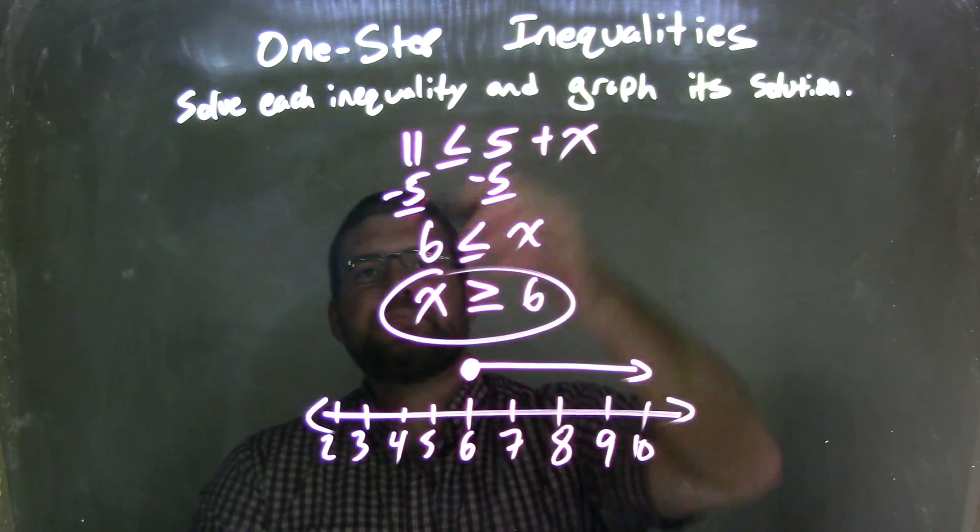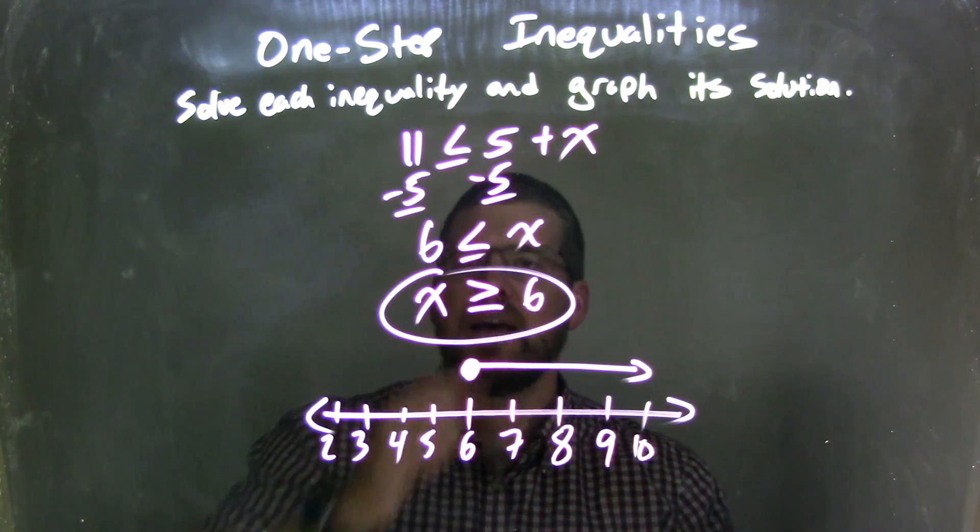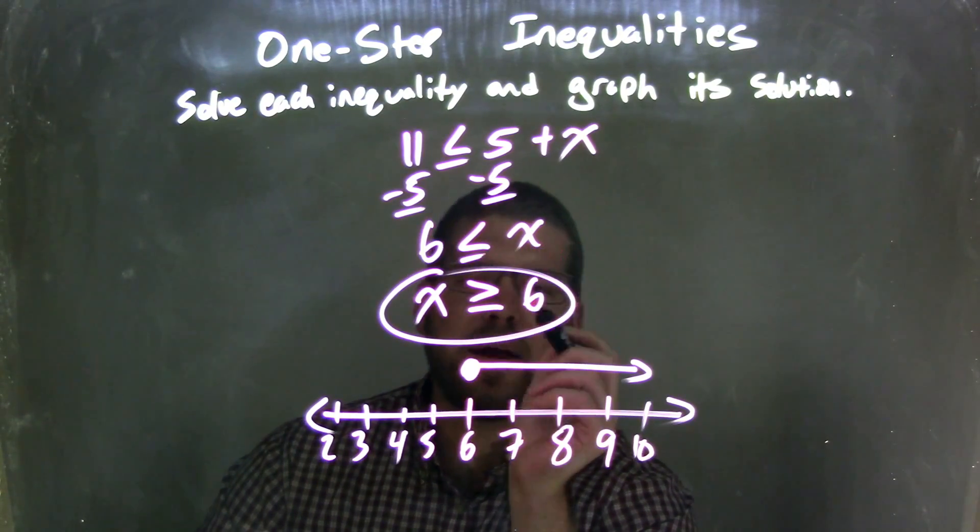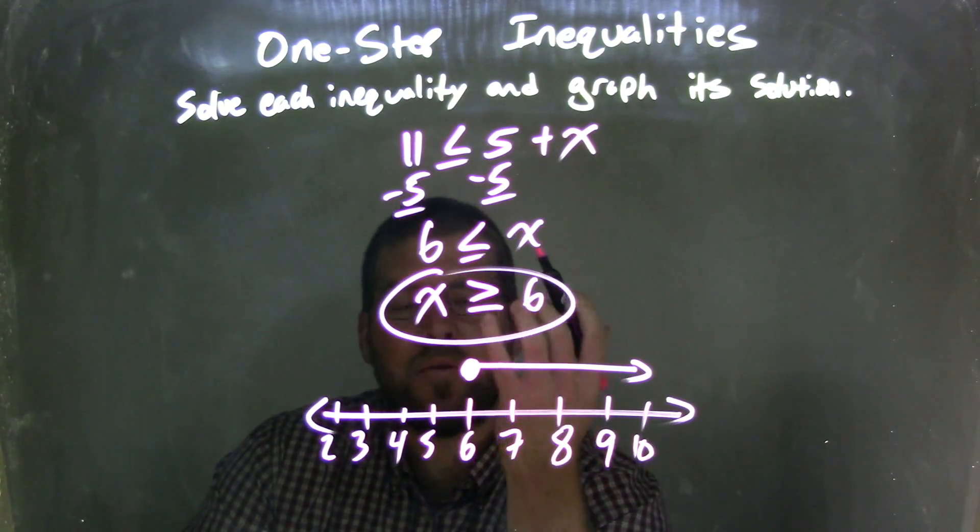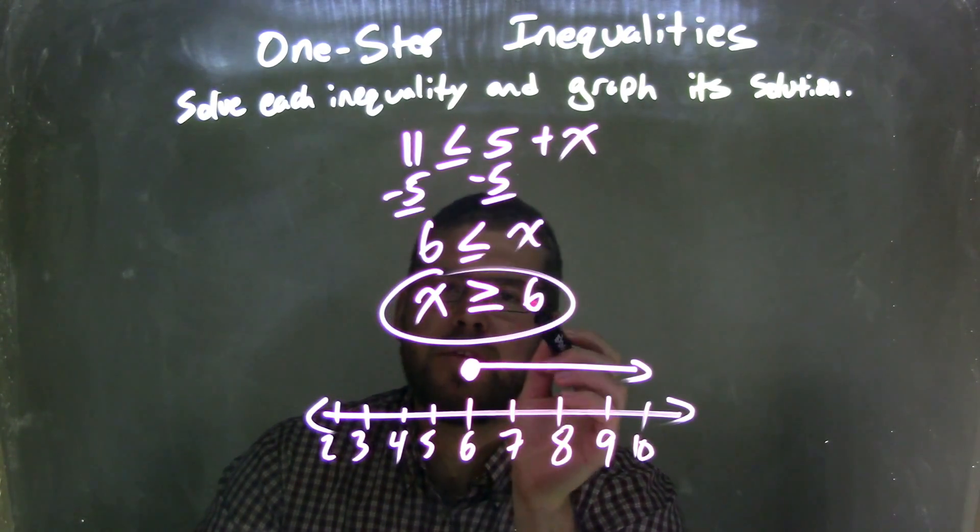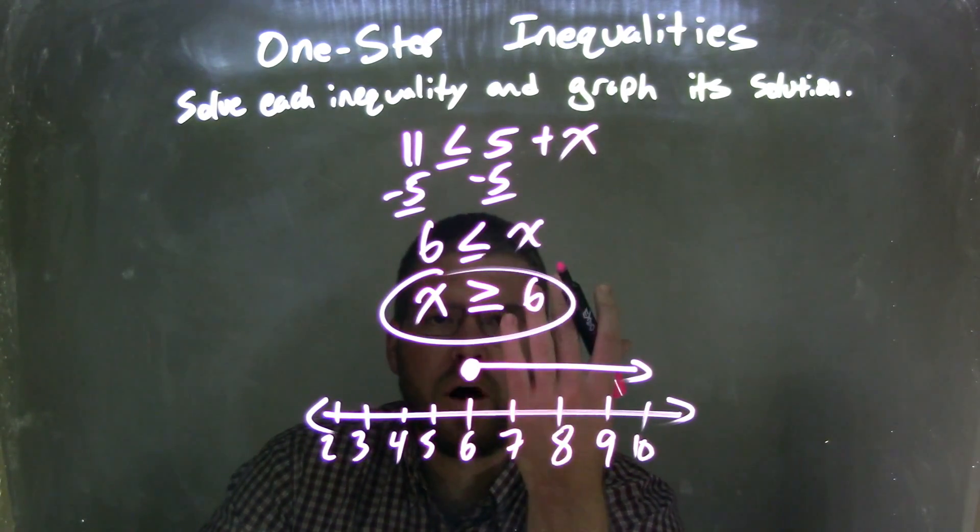So let's recap. We're given 11 is less than or equal to 5 plus x. I subtracted 5 from both sides, leaving me with 6 on the left is less than or equal to x, which is on the right. I then rewrote this with x first. And in doing so, I have x is greater than or equal to 6. By rewriting it with x first, we also have to flip the inequality as well.